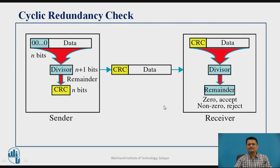Now let us understand how CRC check is carried out. If you have some data D, at the transmitter side you append n number of zeros to that data. How many bits you append depends on the divisor decided by the generator polynomial: if the divisor has n+1 bits, you append n zeros. So if your divisor has 5 bits, you append 4 zeros. The data along with these appended zeros is divided by the divisor, and whatever the remainder is, that is called the CRC code. The CRC code will be of n bits.